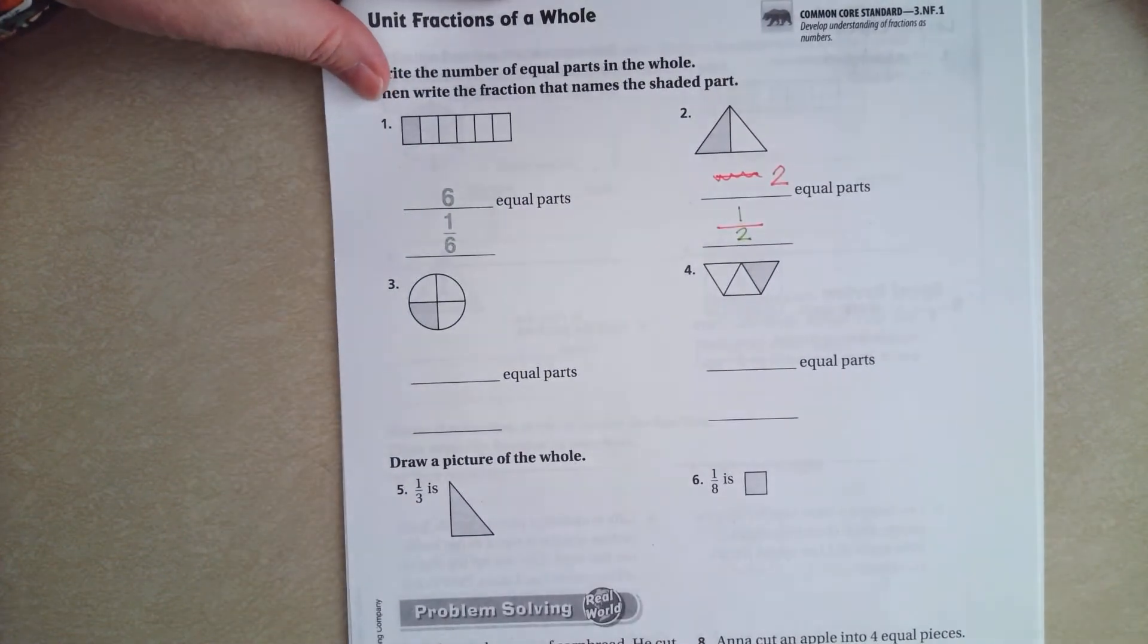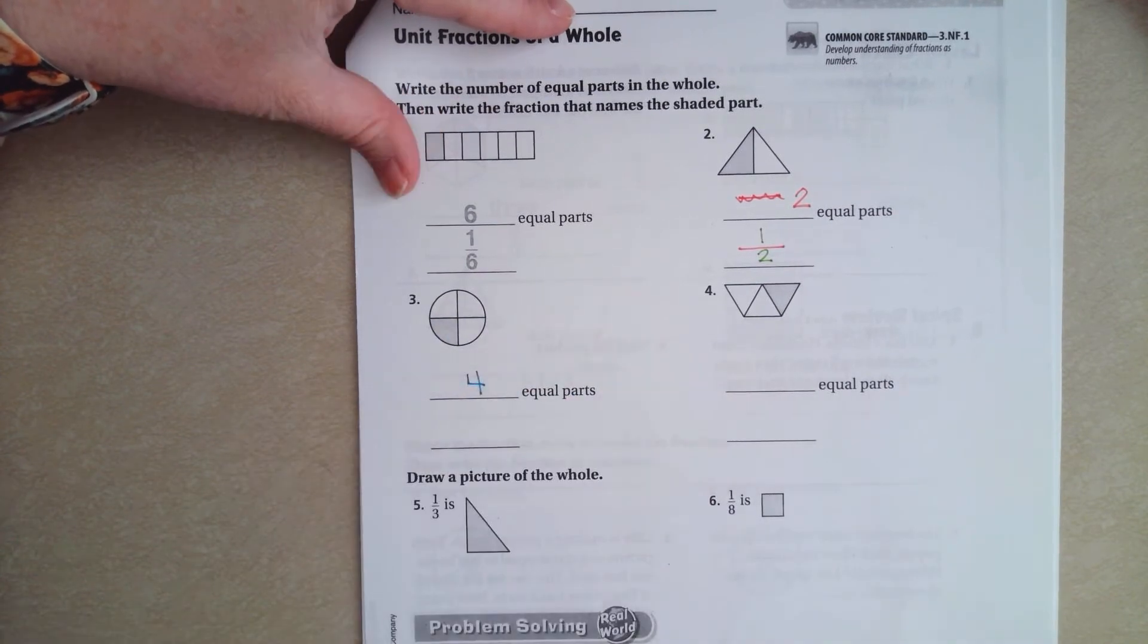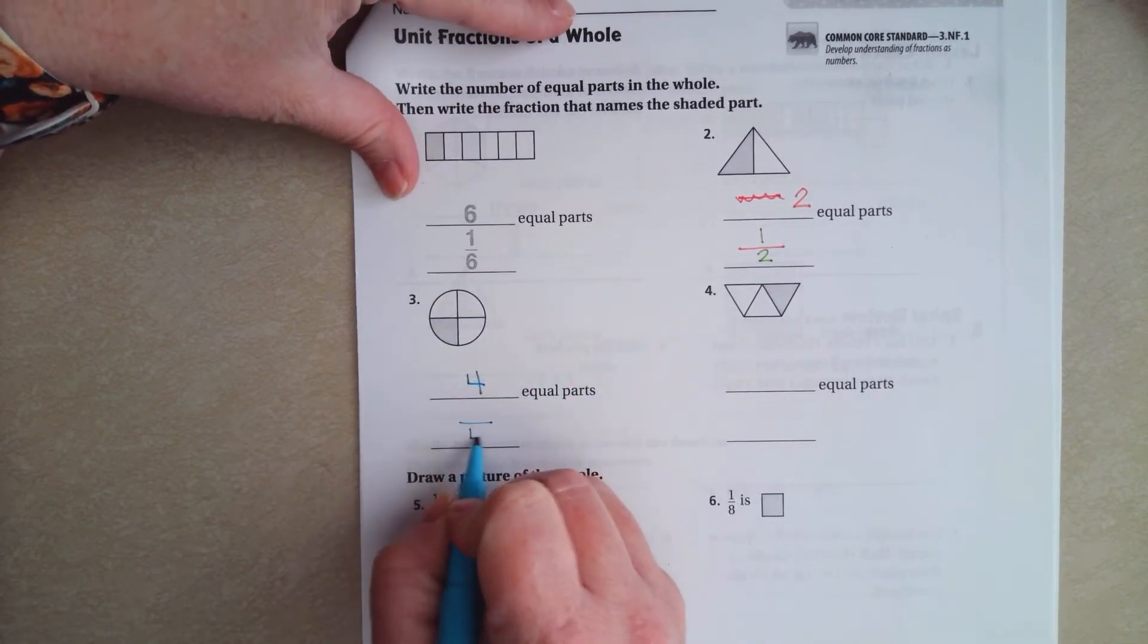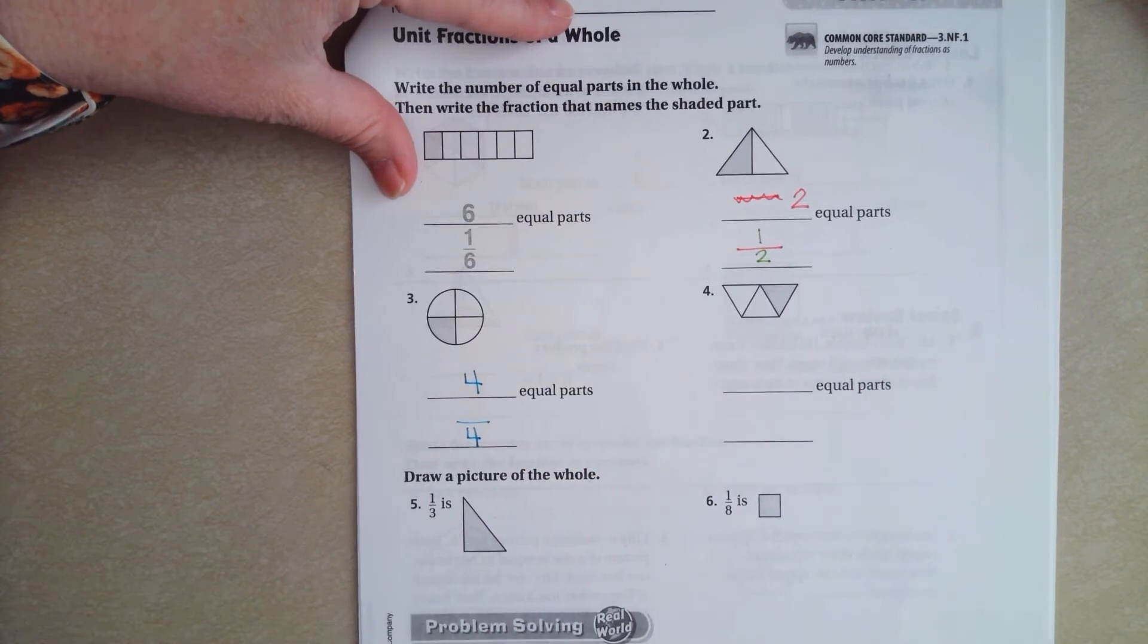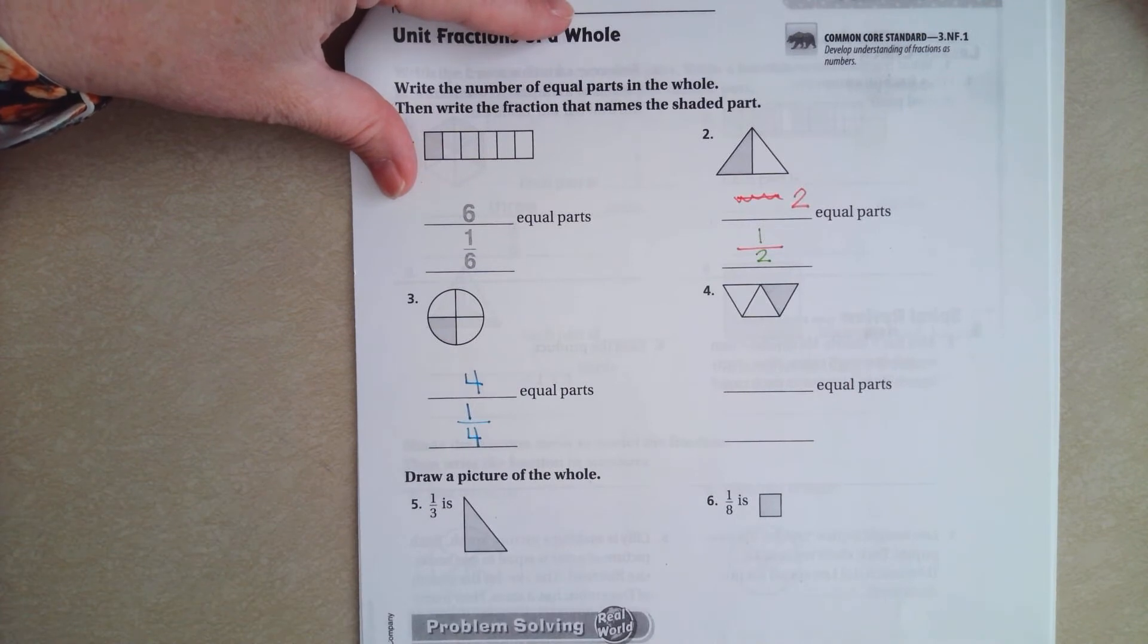Let's try it again. So, how many equal parts? Well, there's four equal parts. Which means that our denominator is four. Now, there's one of those parts filled in. One.